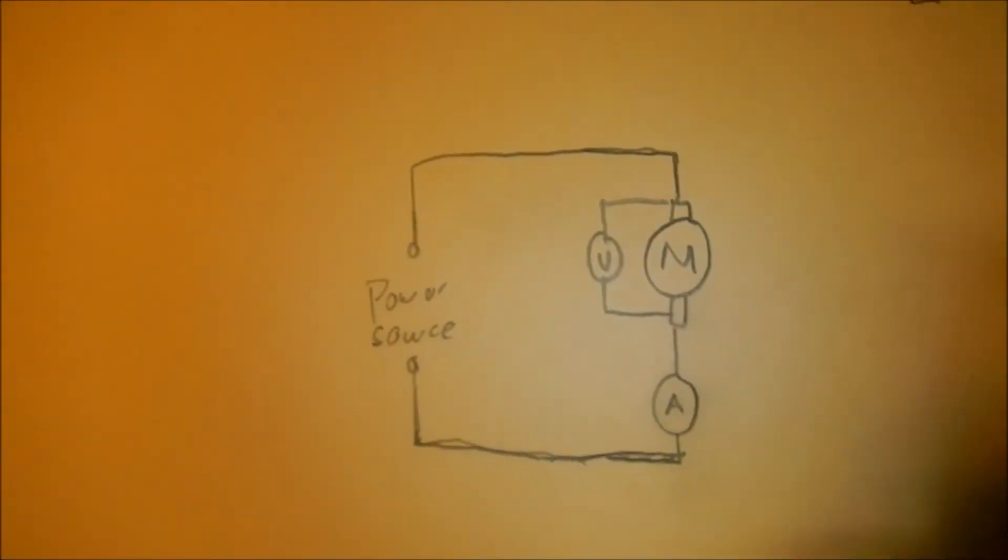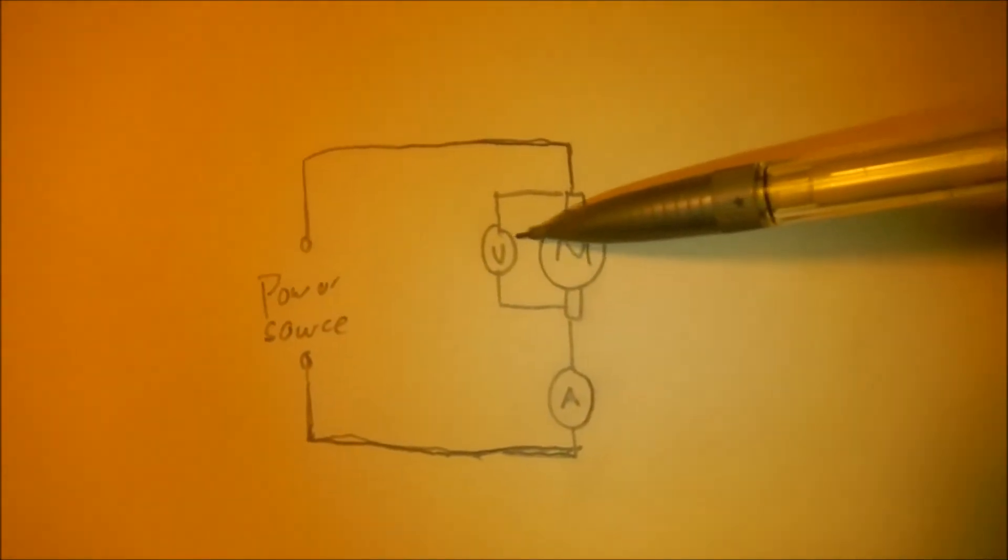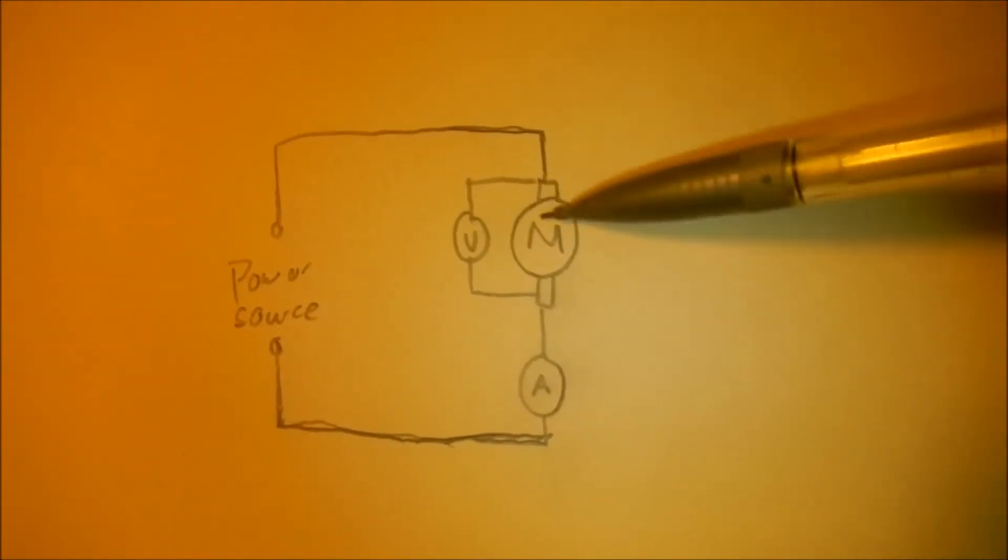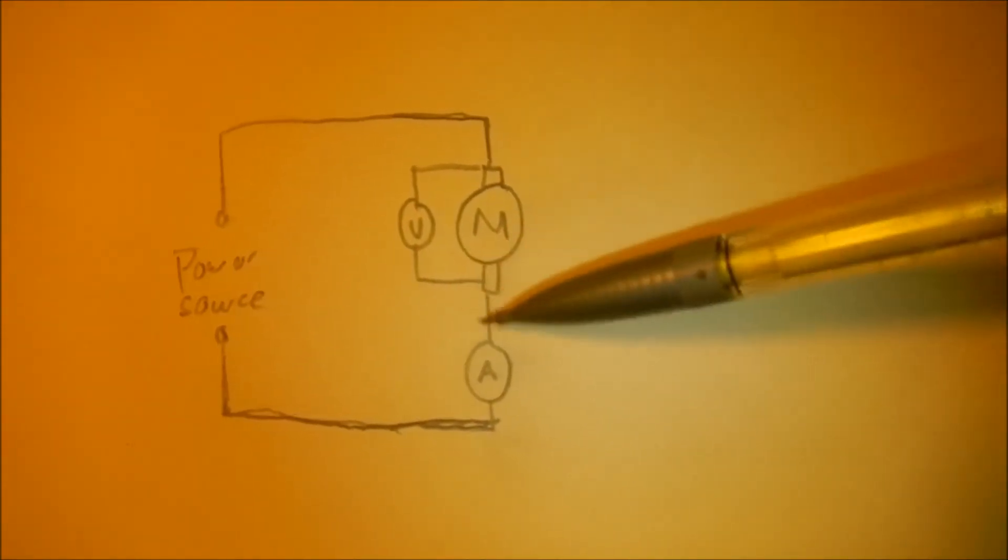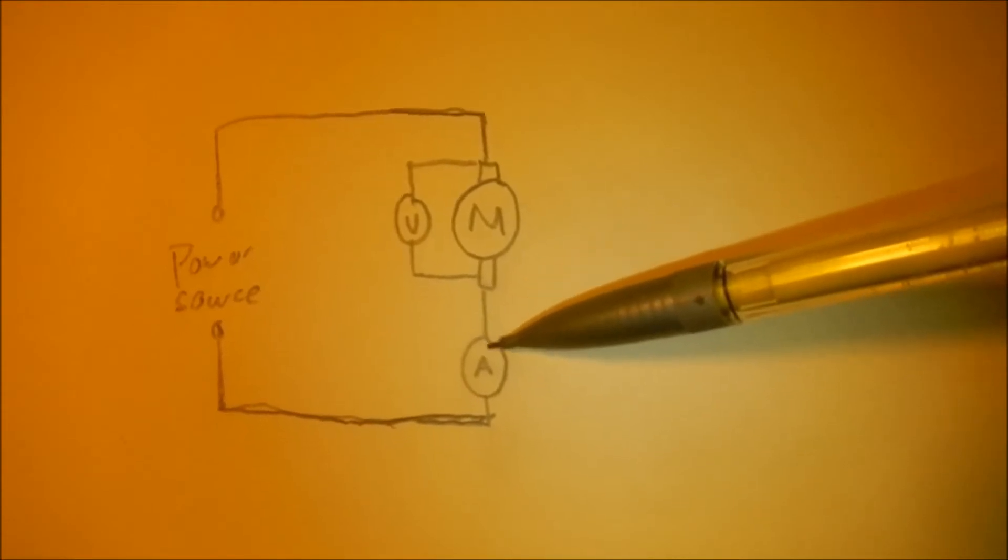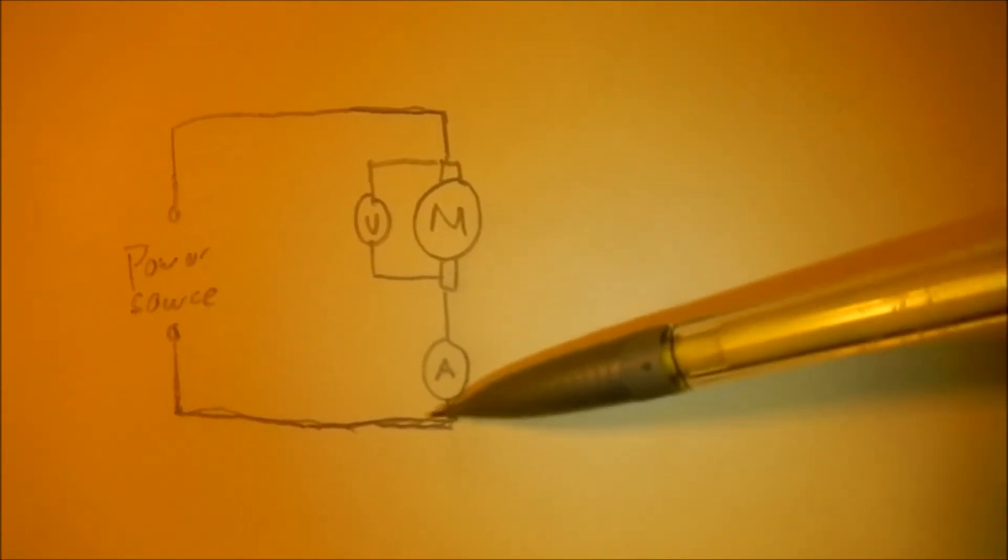And this is a schematic representation of how it'll be connected. You'd have the voltage terminals that would go across your load, and I have here just like a motor. And then you'd be measuring the current through the load. So the voltage across the load and the current through the load.